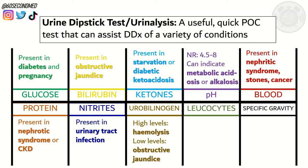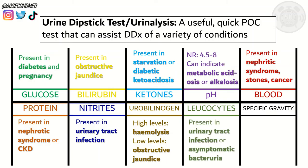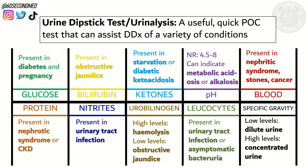Leukocytes in the urine can be present in urinary tract infection, but do beware asymptomatic bacteriuria. Specific gravity looks at concentration — low levels mean dilute urine and high levels mean concentrated urine.